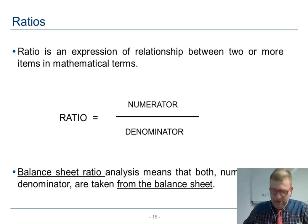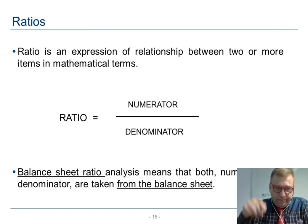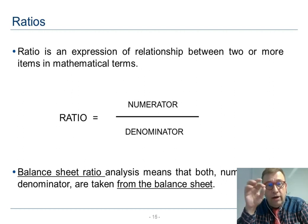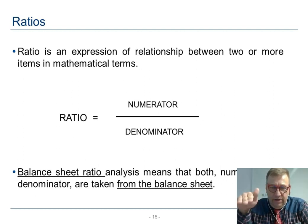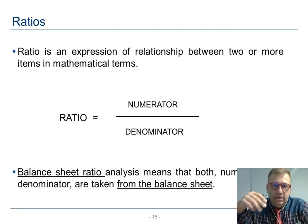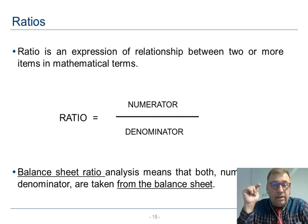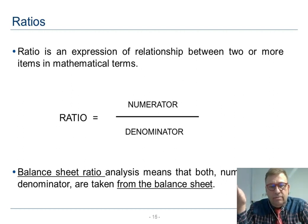Finally, we have ratios. A ratio is an expression of the relationship between two or more items in mathematical terms. Normally a ratio — because it's something to something — has a numerator divided by a denominator, and we get a pure number. Balance sheet ratio analysis means that both the numerator and denominator are taken from the balance sheet. Therefore, we use only this document in our exercise about these particular balance sheet ratios.